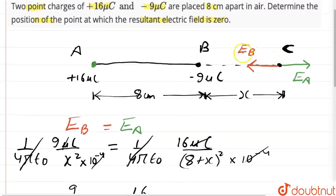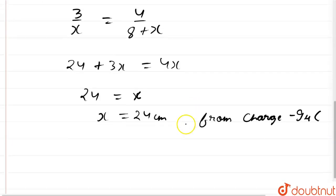Our null point, where the electric field intensity is zero, will be 24 centimeters away from the -9 microcoulomb charge, because we initially assumed that x is the distance from this charge. This is our answer.